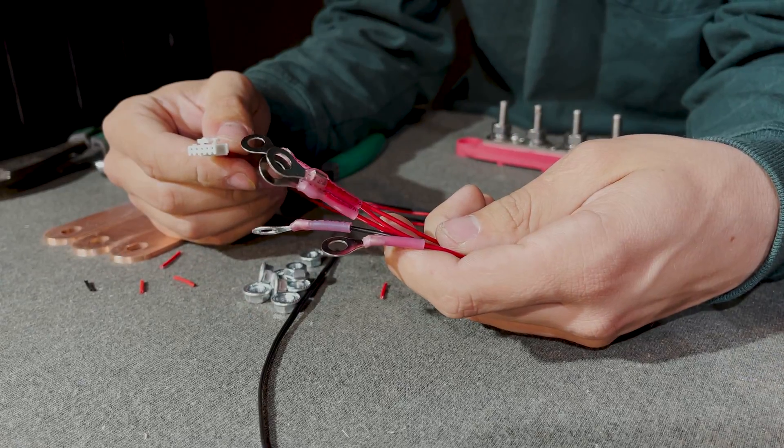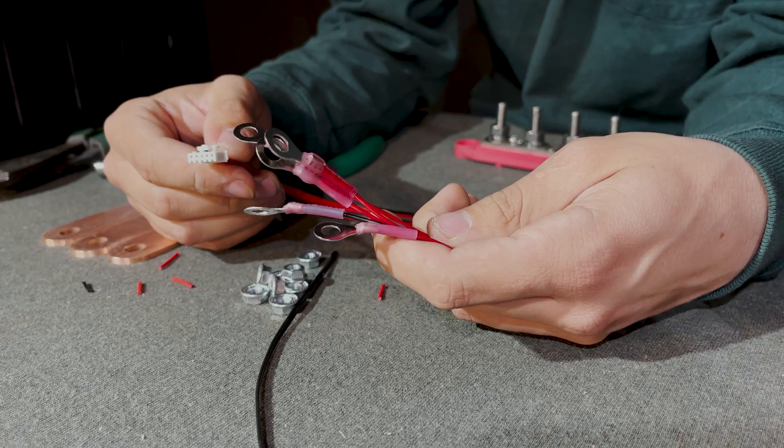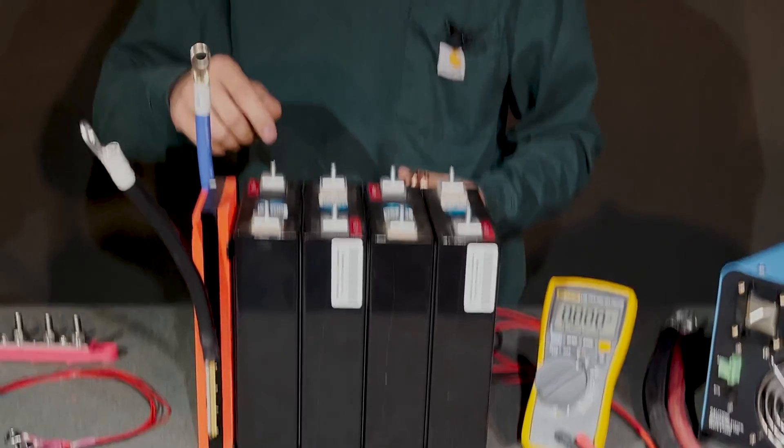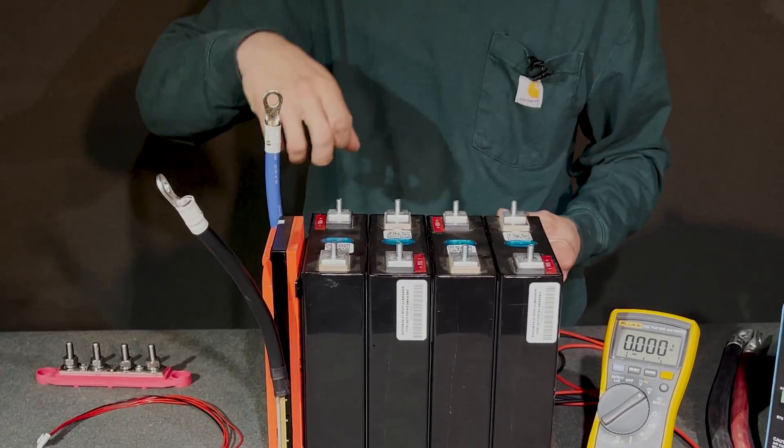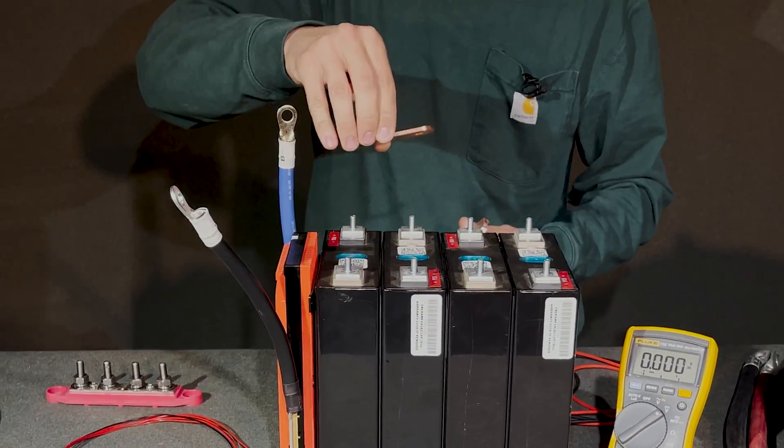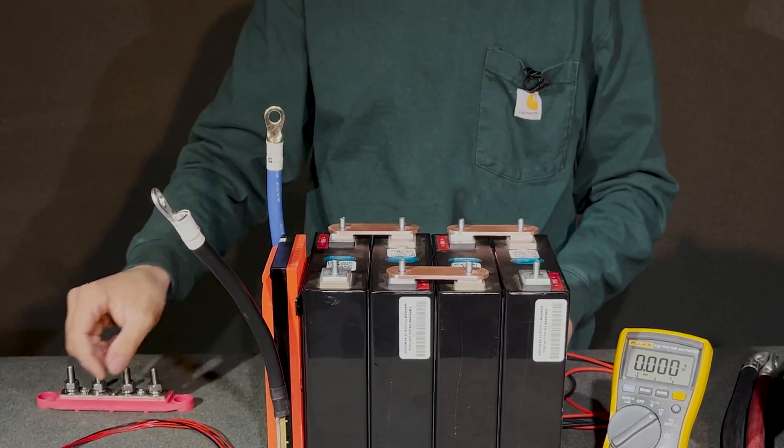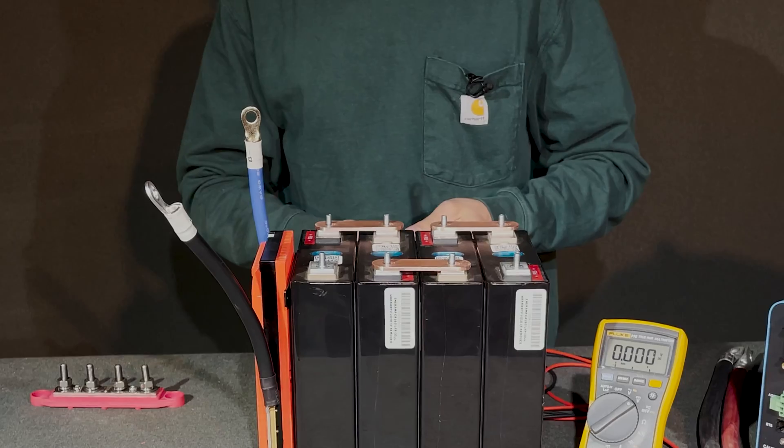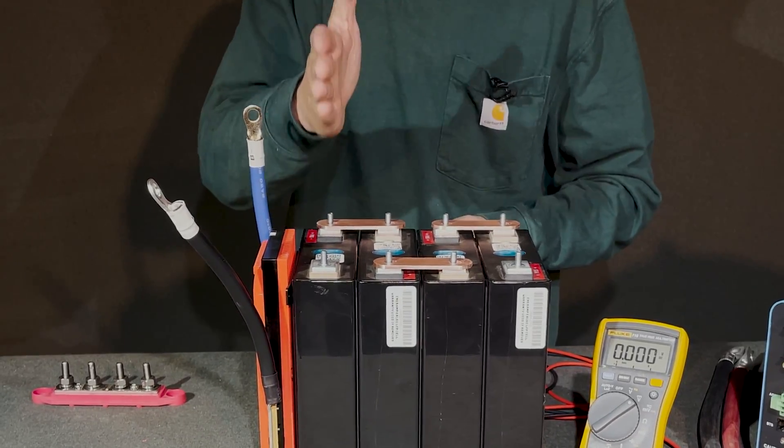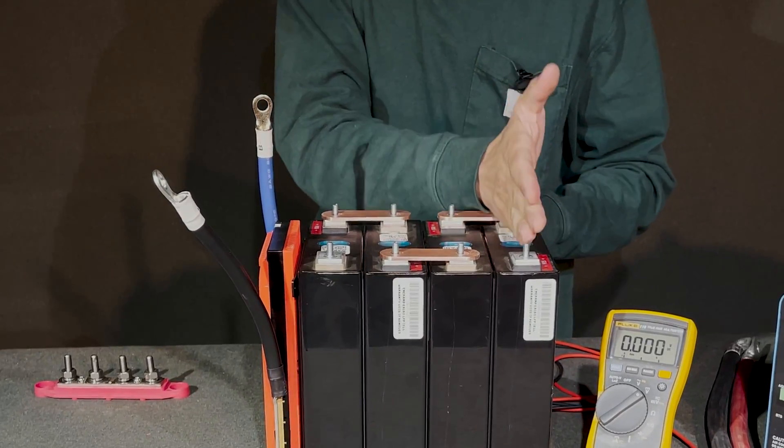With this balancing harness now prepared, we can begin wiring up our battery. Now this battery is already arranged in a crisscross negative positive configuration. So when I put these bus bars in place, I'm effectively putting these batteries in series. So let's break down this battery into the four cells. We have cell 1, cell 2, cell 3, and cell 4.